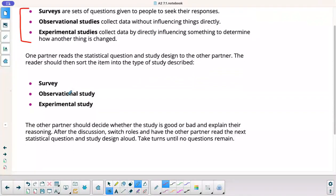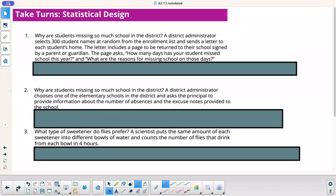All right, so here's what we're going to do now. One partner is going to read the statistical question and study design to the other partner. The reader should then sort the item into the type of study described. So these are our three choices. Then the other person should decide whether it's good or bad and explain the reasoning. And then after the discussion, switch roles and have the other partner read the next. Okay, so we'll just do this kind of all together here. All right, here we go. Here's the first one. If you want to pause the video and try it on your own, you can. I'll just read them and go through.